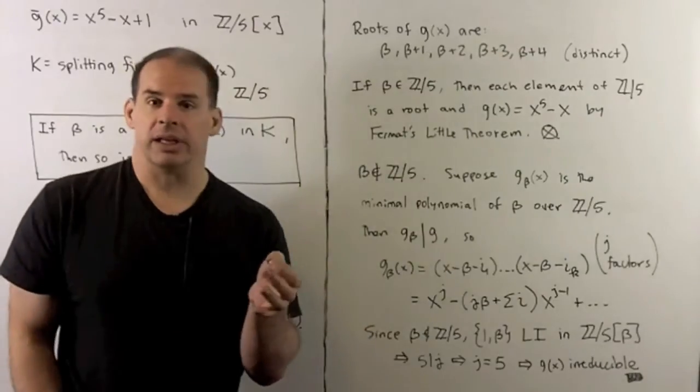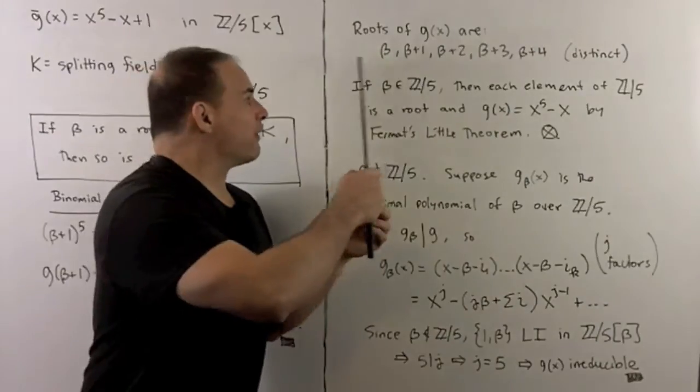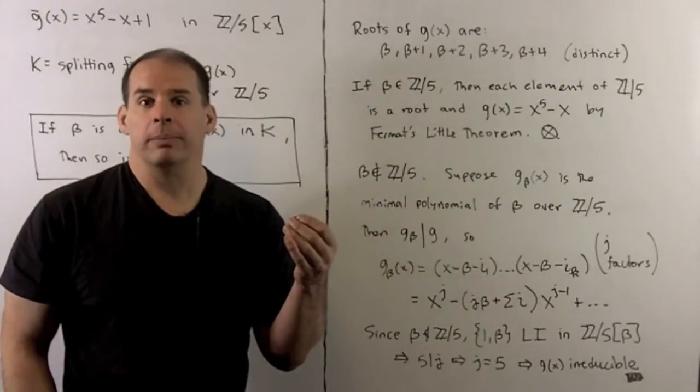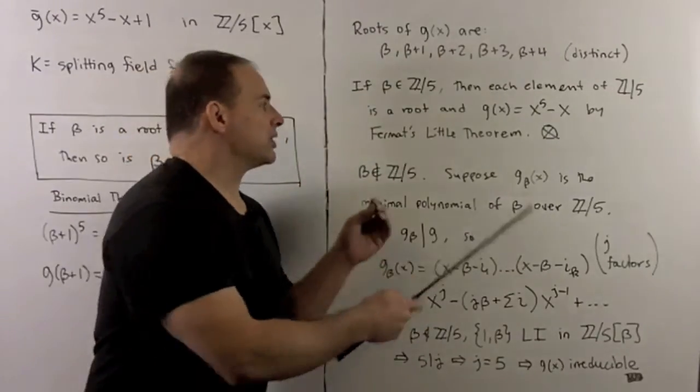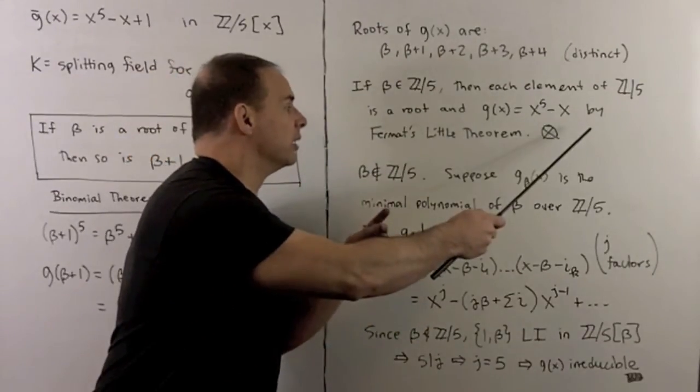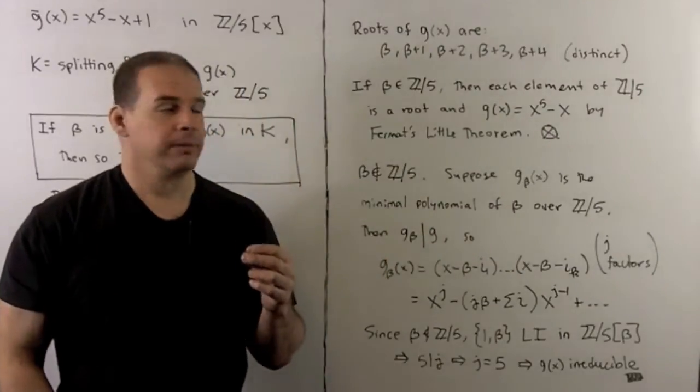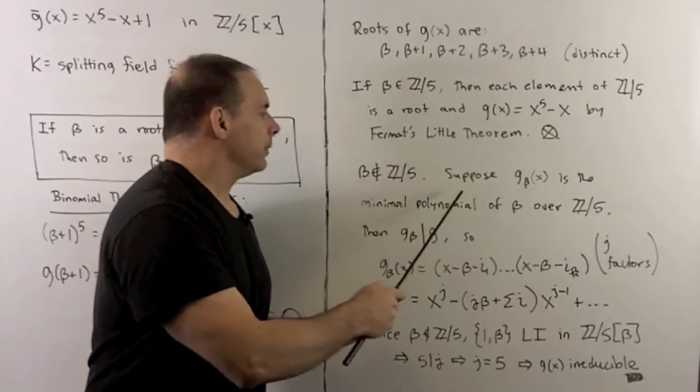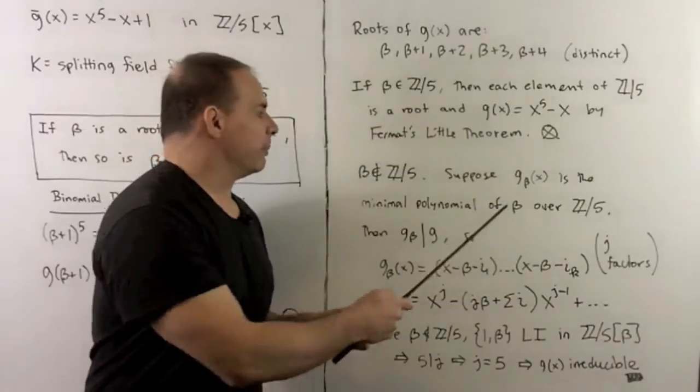Now, possibilities. Beta is already in Z mod five. Well, then the roots are every element of Z mod five. And by Fermat's little theorem, that means g is equal to x to the fifth minus x. By assumption, that's not the case. So beta is not in Z mod five. Let's take the minimal polynomial of beta, so that's the polynomial of smallest degree such that beta is a root. Lead coefficient's one.